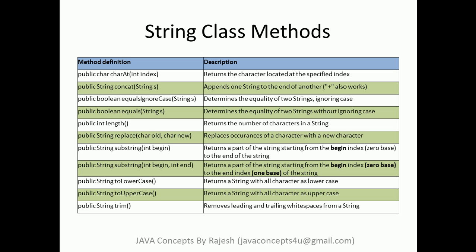The first form is `public String substring(int begin)`. The `begin` parameter is the index from where the method starts extracting the part of the string, and it continues to the end. This is a zero-based index. The second form is `public String substring(int begin, int end)`. This also returns a part of the string from the zero-based `begin` index up to the `end` index — but note that the `end` index is one-based, meaning it starts from one, not zero. Please keep this in mind.